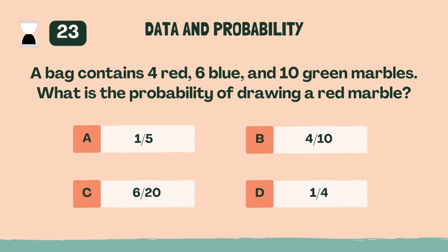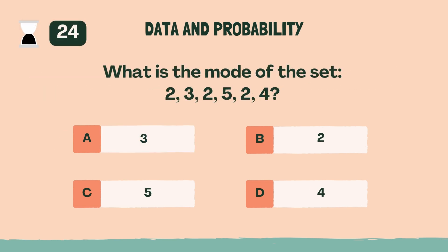A bag contains 4 red, 6 blue, and 10 green marbles. What is the probability of drawing a red marble? A, 1 fifth. What is the mode of the set 2, 3, 2, 5, 2, 4? B, 2.